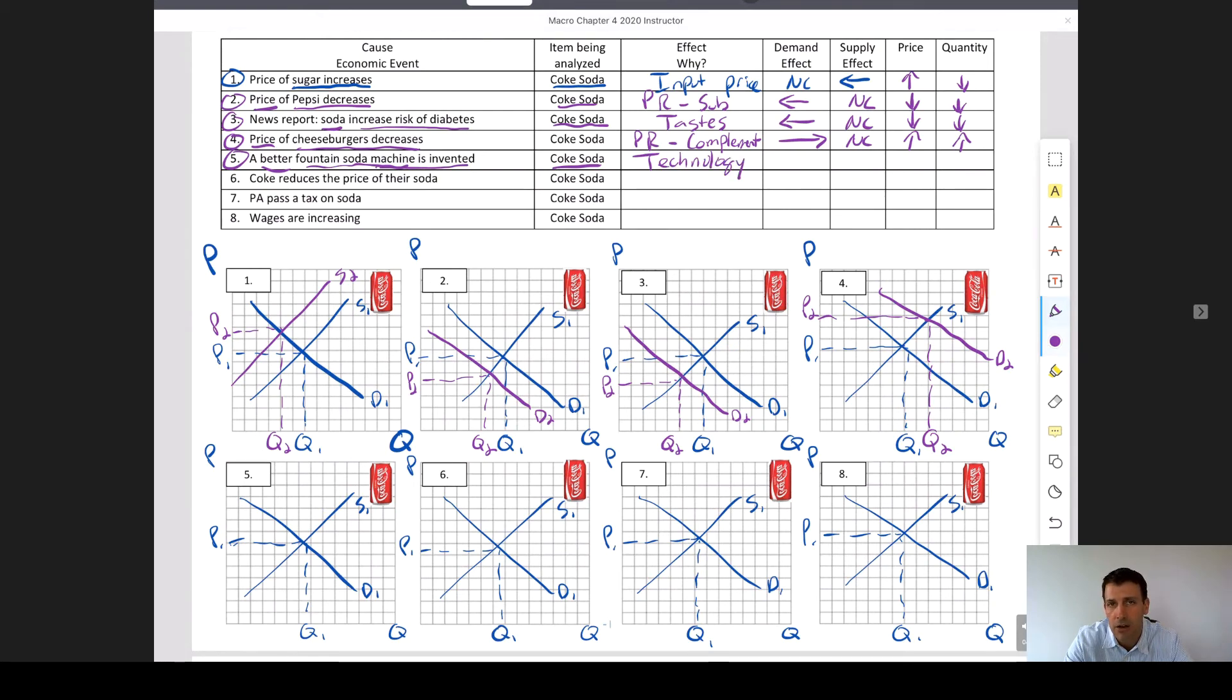Better fountain soda machines. So that's technology that allows me to supply more to the marketplace. So that would shift our supply curve to the right. Again, right is an increase. That would actually push down prices but increase quantity.